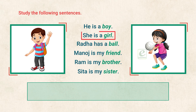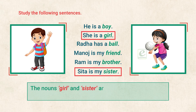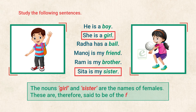In sentences 2 and 6, the nouns 'girl' and 'sister' are the names of females. These are, therefore, said to be of the feminine gender.